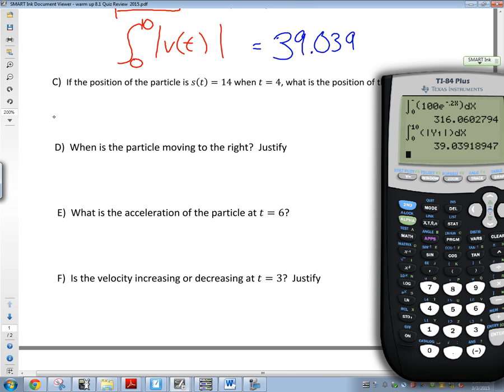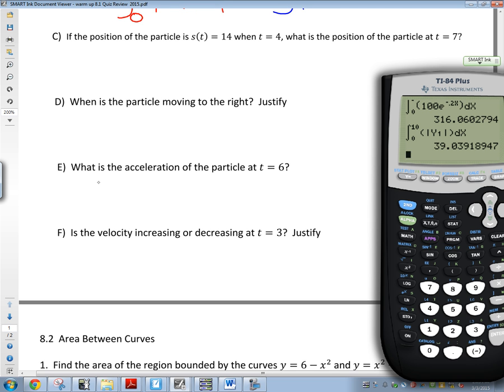Alpha trace gives you the variables. You could just type it back in again, but alpha trace is easier. If the position of the particle is s(t) = 14 when t equals 4, what is the position of the particle at 7? So it's telling you where you are at 4 seconds. You want to know at 7 seconds.